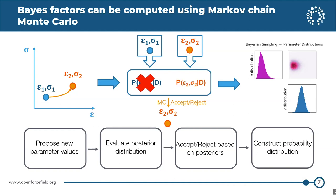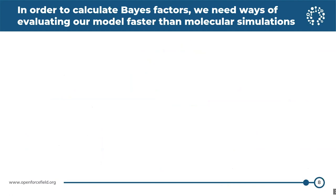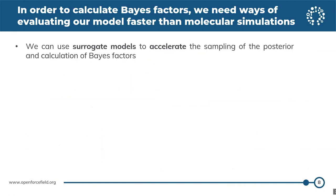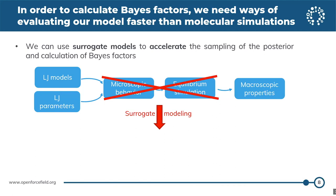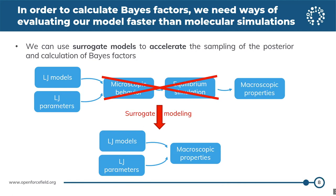The way we interpret the reversible jump results is: if you're sampling both models and you sample one ten times more than the other, then that model is probably ten times better. You're probably thinking that if you have to run an equilibrium simulation every Monte Carlo step, this isn't feasible — and I agree. That's why our plan is to use surrogate models to accelerate the sampling of the posteriors. With a surrogate model, you can go directly from your model and parameters to the macroscopic properties — essentially an analytical function that takes parameters and returns the observable response.